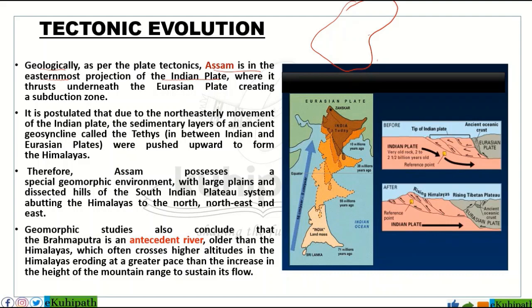The Indian plate moved northward and finally collided with the Eurasian plate. This collision zone is formed by the subduction zone.